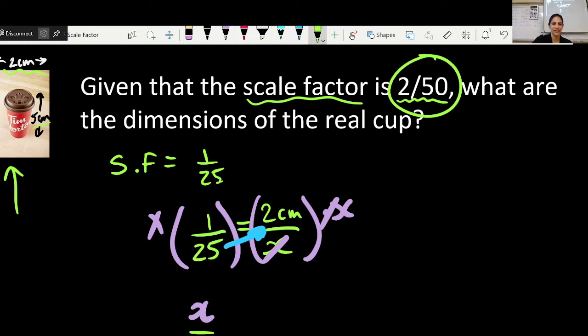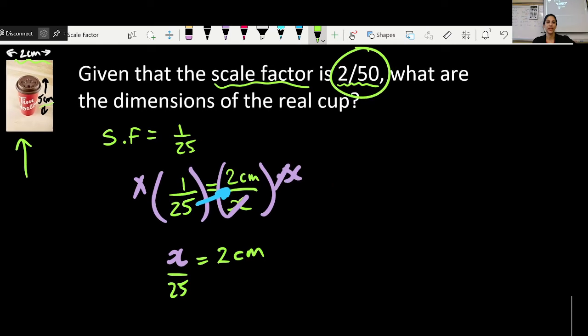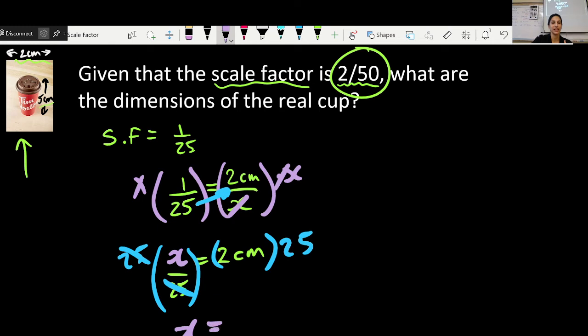x over 25 equals 2 centimeters is what we had for the next step, right? And then if at this point I want to get rid of the 25 using the step-by-step method that we've been learning, then I would multiply both sides by 25 because algebra is all about opposites. And that is ultimately how we got the x equals, when we put these together, it would be 50 centimeters.